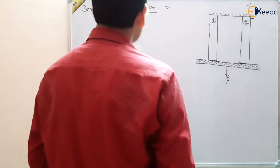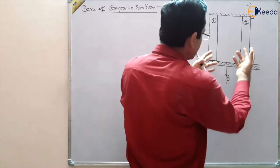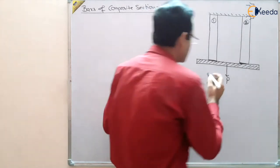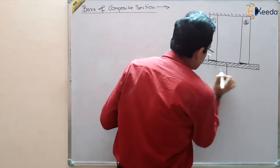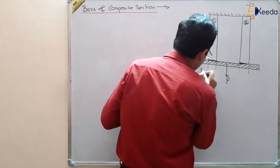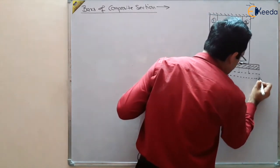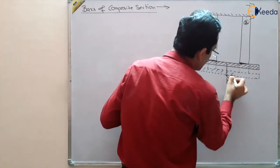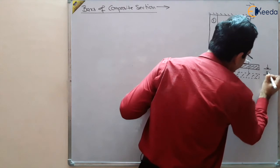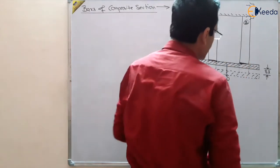Two or three important points must be noted. First, as the bars deform, the deformation will be equal in both bars because they are connected through a rigid bar. So after deformation, bars 1 and 2 deflect, and the rigid rod attains a new position. The deflection Delta L is the same in bar 1 and bar 2.